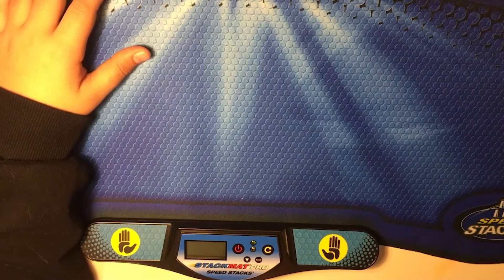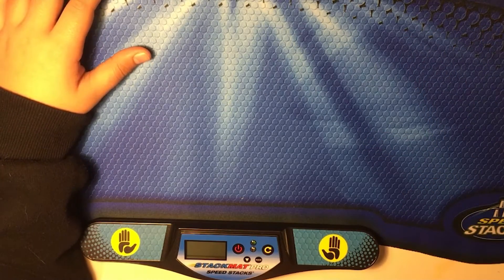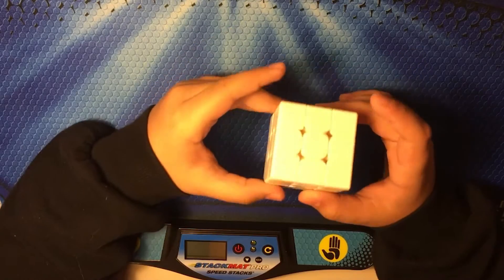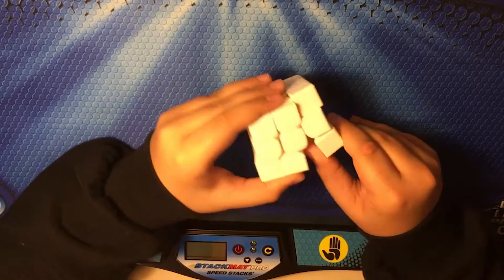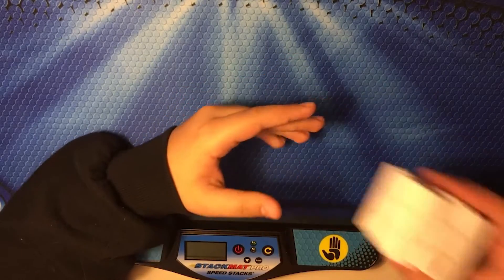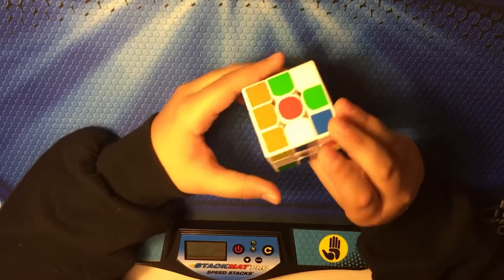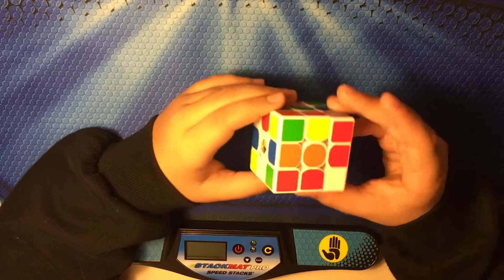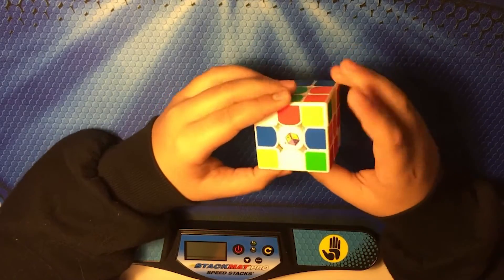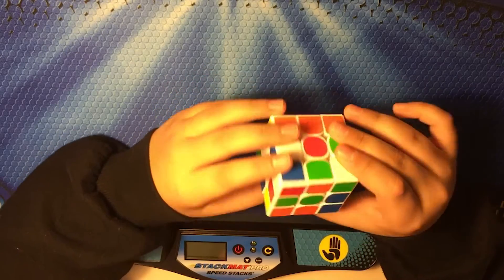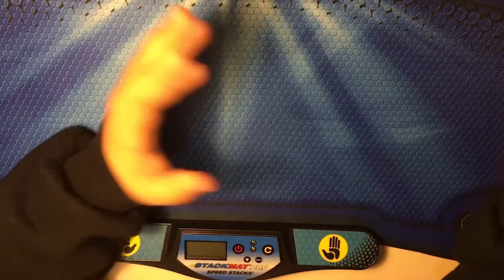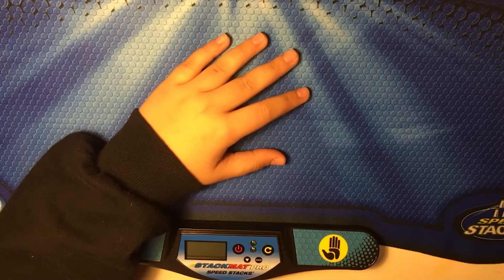I have this cube right here which is a YuXin Little Magic. I took off all the stickers. It was a white one. I have the same with stickers. See right here, it's scrambled right now. I'm gonna solve it later. Good cube, super good cube. It was like three dollars so I got two.